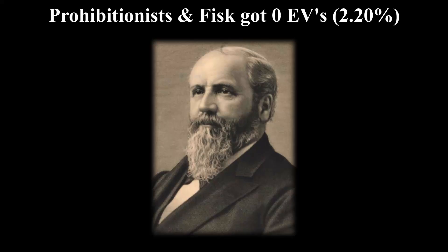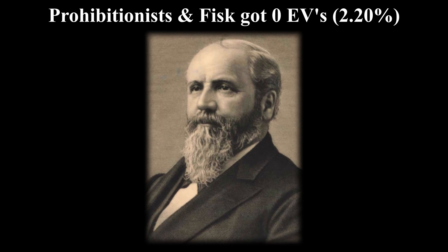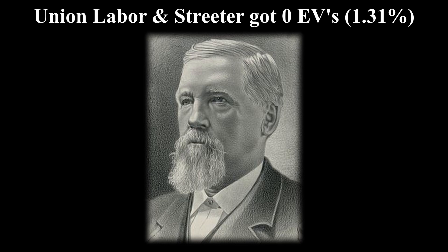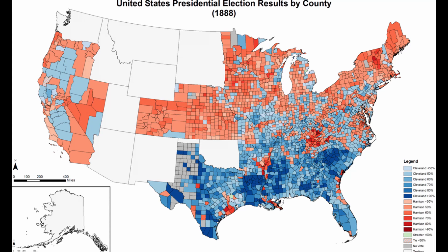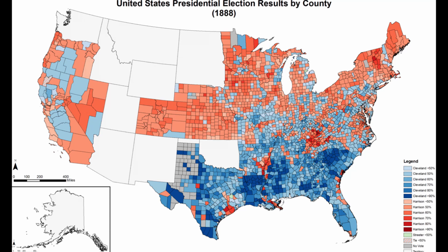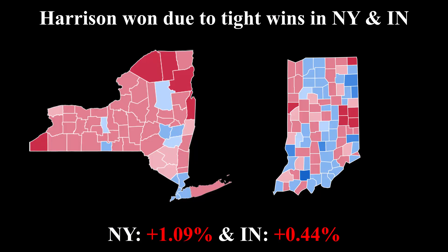Prohibitionist Fisk got a respectable 2.2% in this election, while the Union Labor Party and Streeter got 1.31% of the vote. This election was a close one and came down to the wire, with New York and Indiana being decisive. Interestingly, Cleveland still lost even after improving his vote tally from 1884, as seen for example in New York.